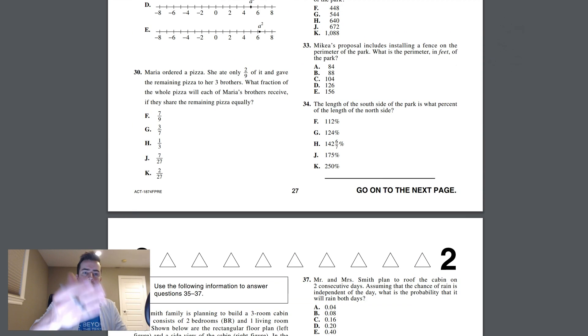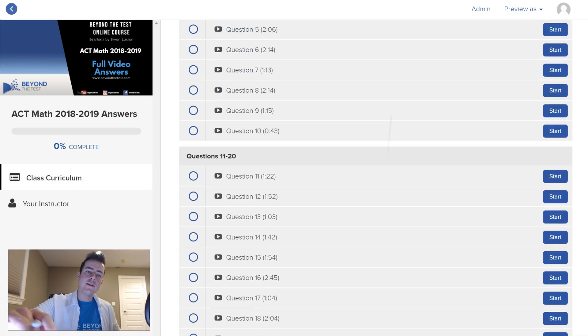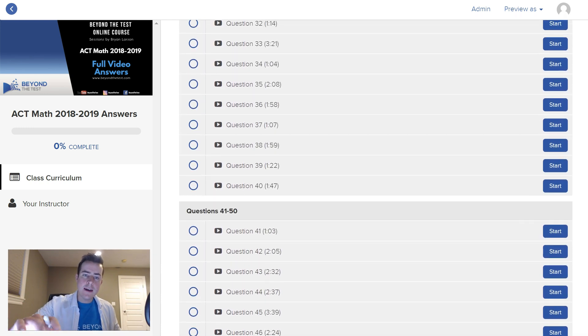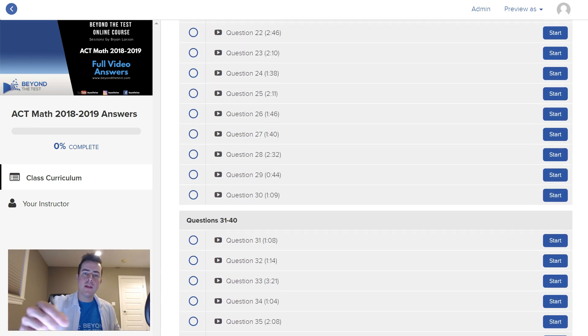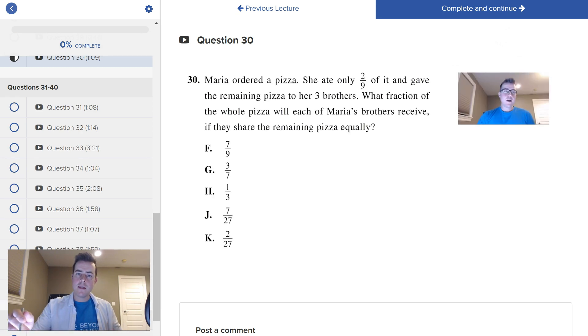So like question 30 there, it's asking about Maria ordering a pizza. Well, when you go back to our course here, you're going to get all the answers to every single one of these questions included. So when I'm talking about question 30 there, if I wanted to check that out, and I go up here. All right, question 30.